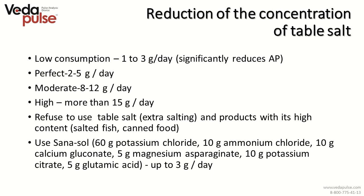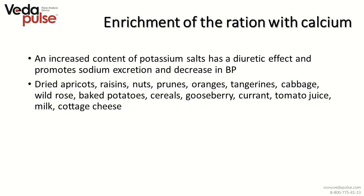Enrichment of the ration with calcium is extremely important, and increased content of potassium salts has a diuretic effect, promotes sodium excretion, and decreases blood pressure. Potassium is contained in dried apricots, raisins, nuts, prunes, oranges, tangerines, cabbage, wild rose, baked potatoes, cereals, gooseberry, currant, tomato juice, milk, and cottage cheese.